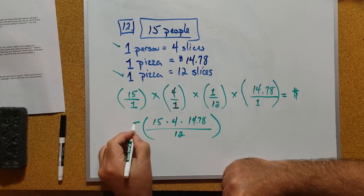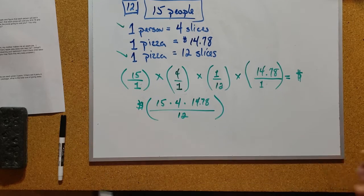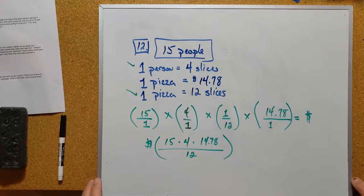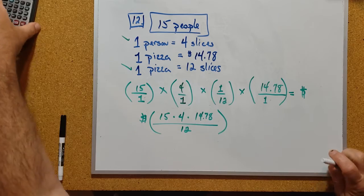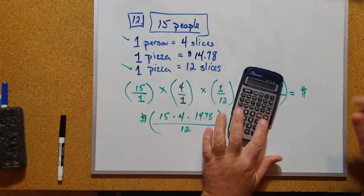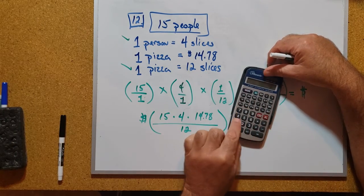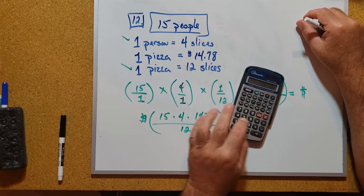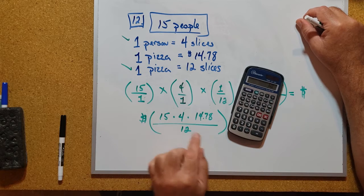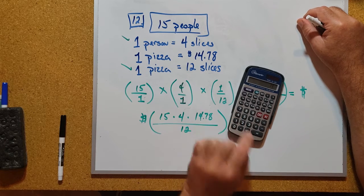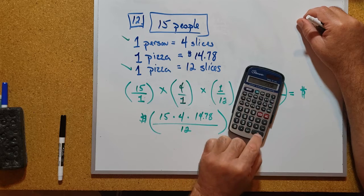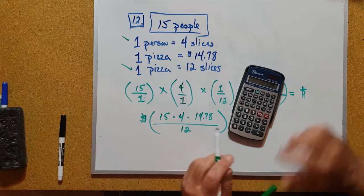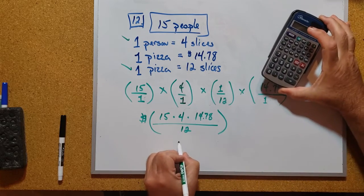That is the number of dollars I'm going to have to spend to feed 15 people, assuming they eat four slices each. Let me get out my calculator and start doing this. 15 times 4 - everybody said that was 60. Then we're going to multiply that by 14.78 and divide that whole number by 12, so it's $73.90.